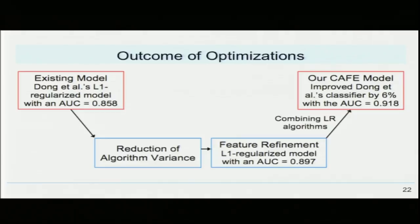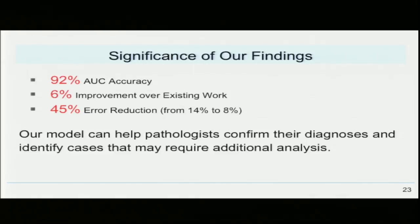To recap, we began with six existing machine learning algorithms, reduced the algorithm variance, extracted active features, and finally combined the top performing machine learning algorithms to result in our final CAFE model, which had a 6% improvement over previous work. This is especially significant considering that Dong and others already achieved a very high AUC of 0.86. Our 92% AUC accuracy, or 6% improvement, translates to a 45% reduction in error from an error rate of 14% to 8%. With such high accuracy, we are confident that our model can help pathologists confirm their diagnoses and identify cases that may require additional analysis, especially as mammographic screening becomes more prevalent worldwide.